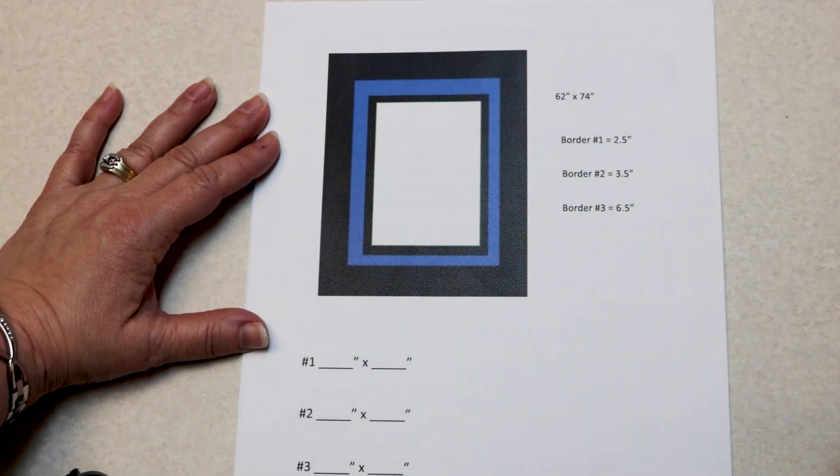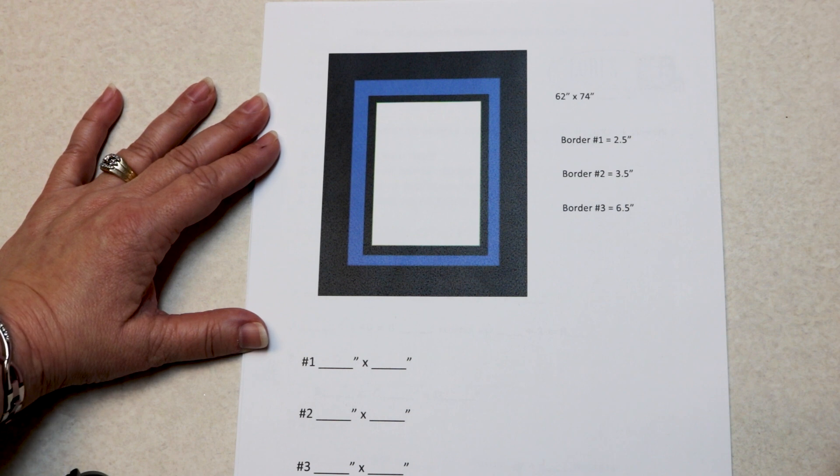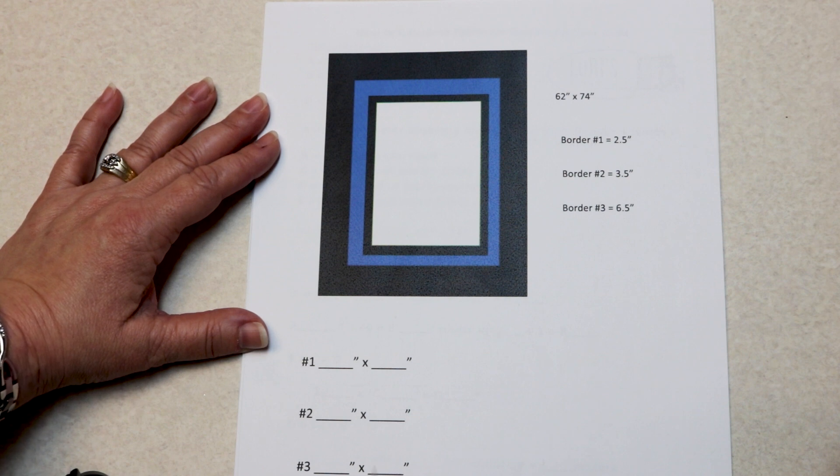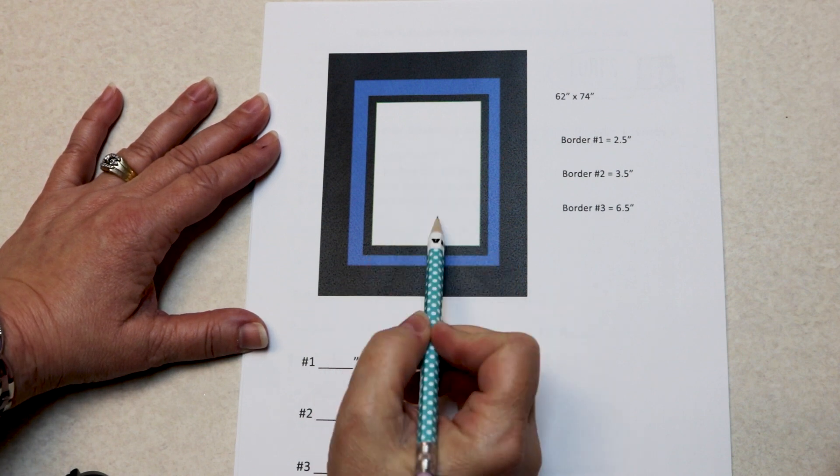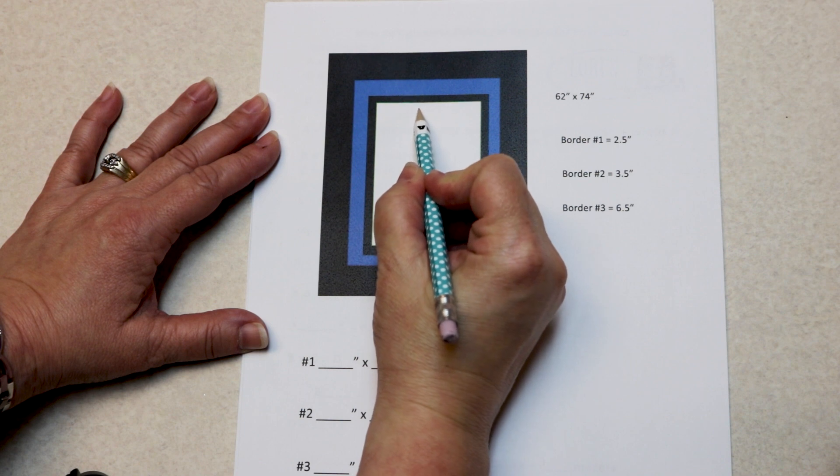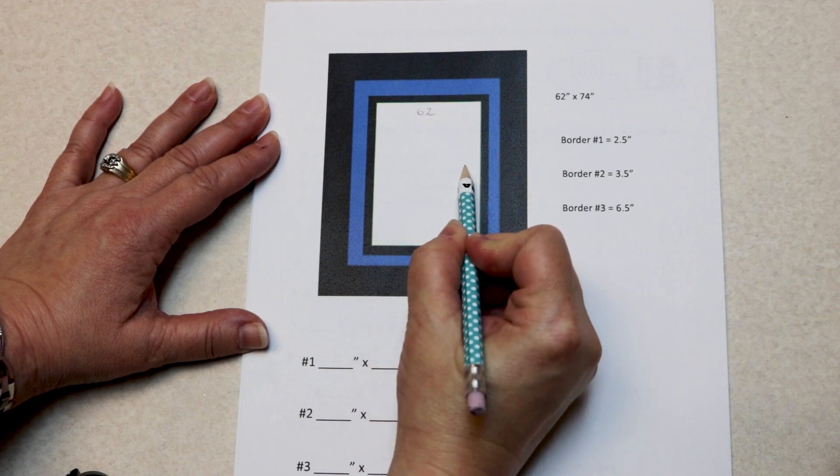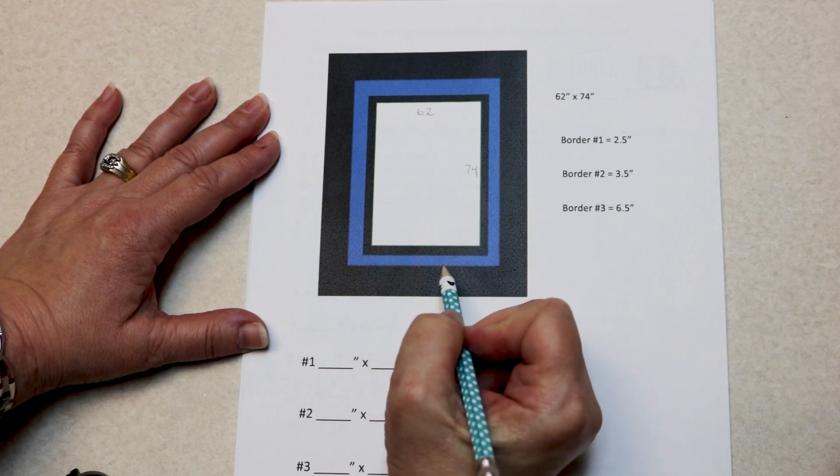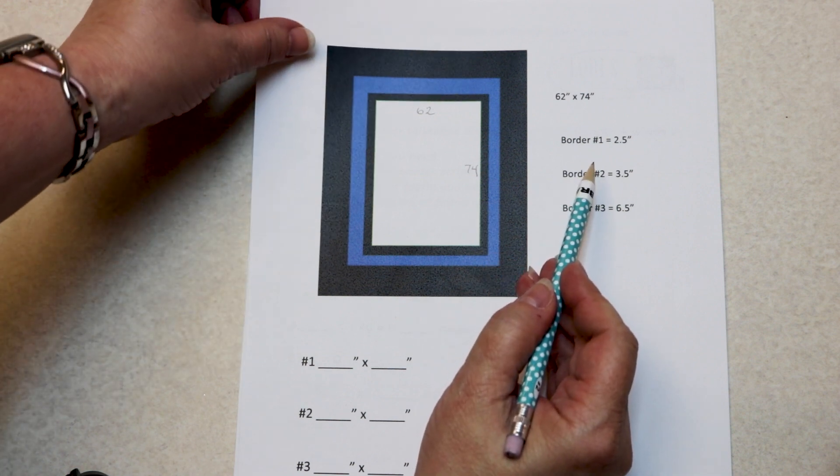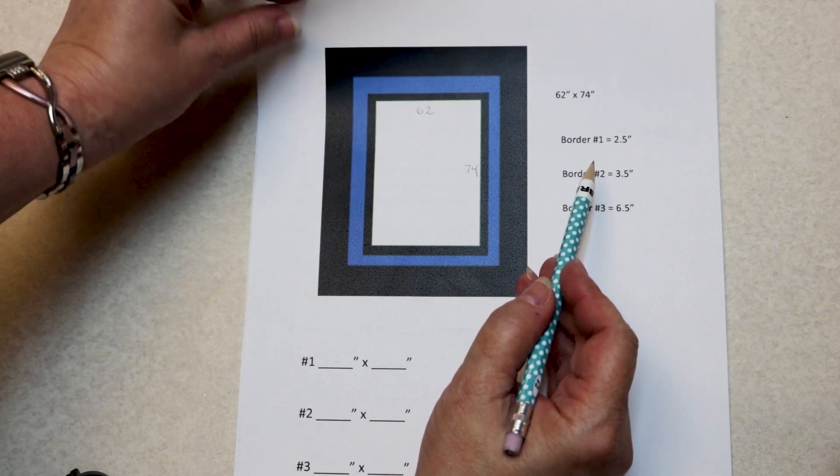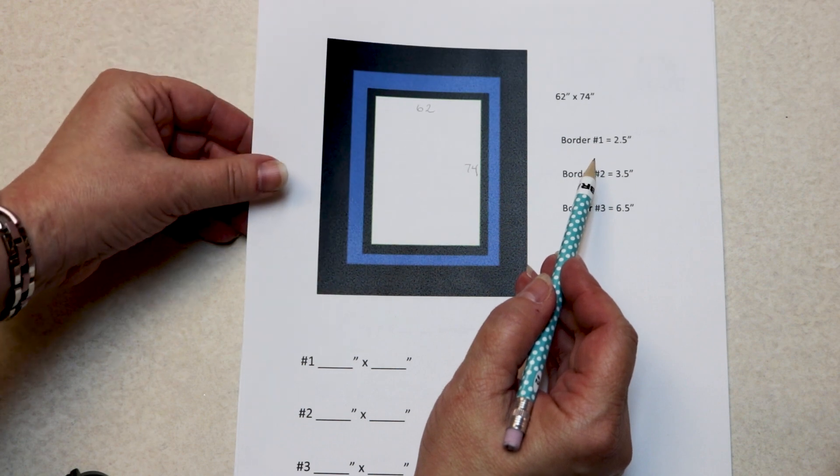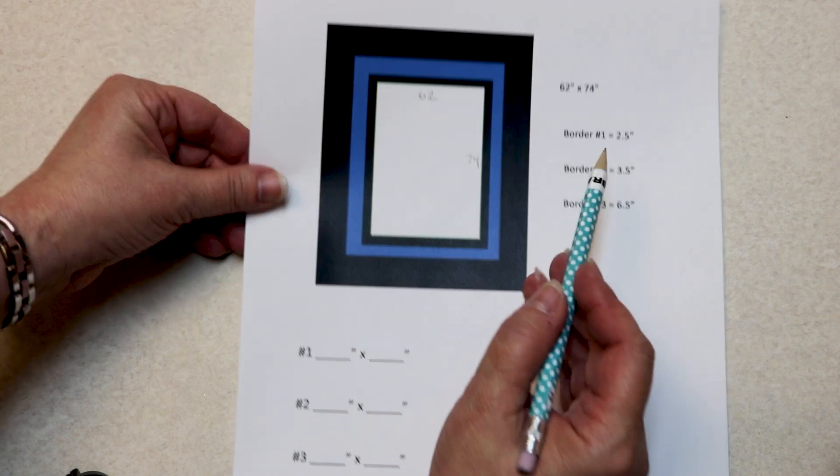Let's put some borders on our quilt. I always draw a picture when I'm putting on multiple borders. It just helps me to keep track of the numbers. So here's our project. We're going to start with a center quilt of 62 by 74, and the first border we're going to add is cut two and a half inches, finished at two inches. Let me show you how it's done.